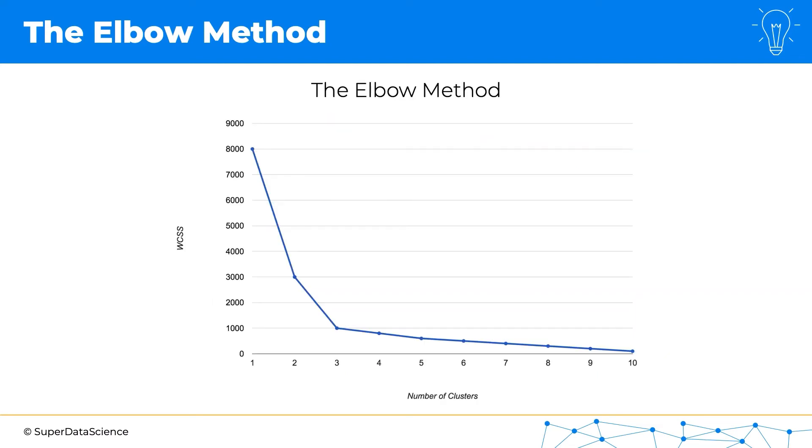The chart that we can build from this looks like this. This is the WCSS on the y-axis, and on the x-axis we have the number of clusters. As you can see, it drops off all the way down to zero, as we just discussed. And the elbow method is very simple. It's actually a visual method.